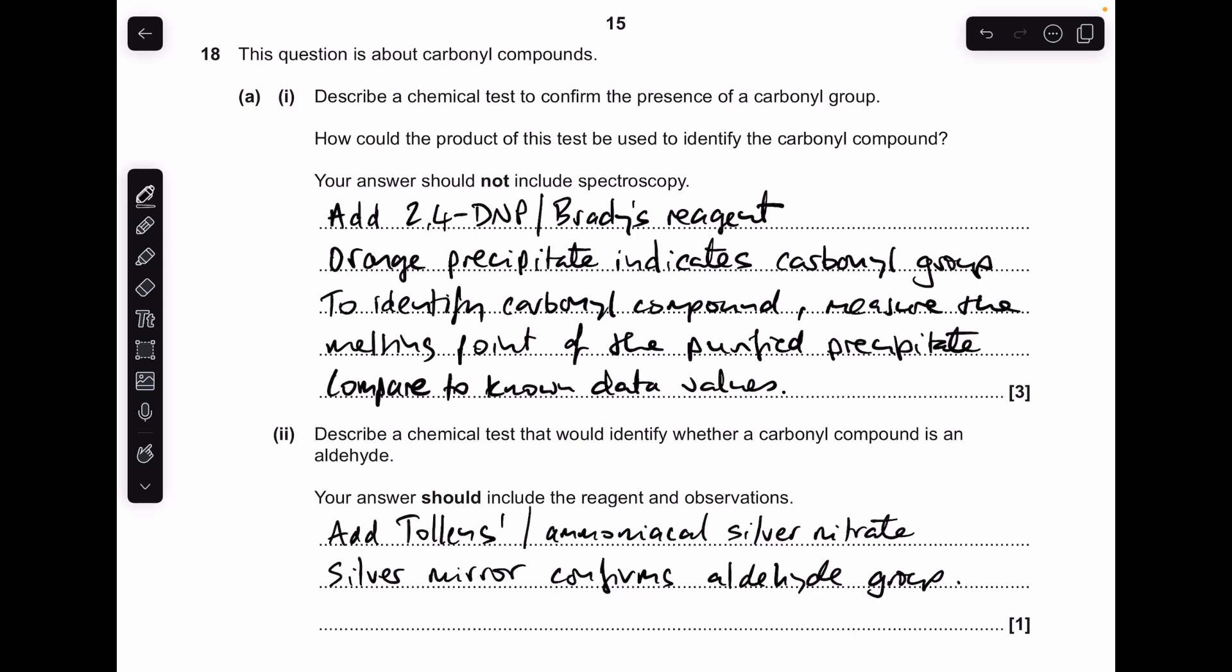Part two, the chemical test that would identify whether the carbonyl is an aldehyde: you'd add Tollens or you could say ammoniacal silver nitrate and the production of a silver mirror confirms the aldehyde group.